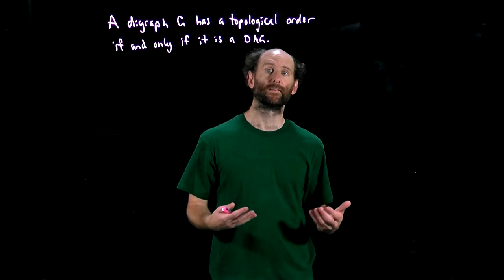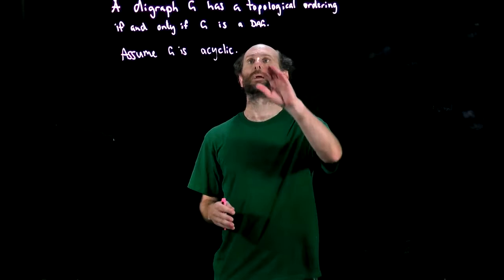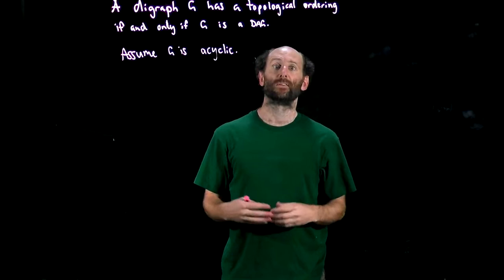We'll start by assuming that G is acyclic. So let's assume that G is acyclic and we'll end up showing that G has a topological ordering. We'll show first that there is a node in G that is a source. How will we do that?